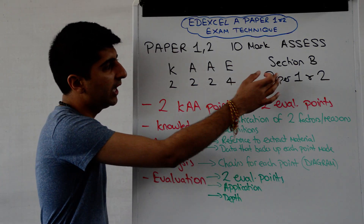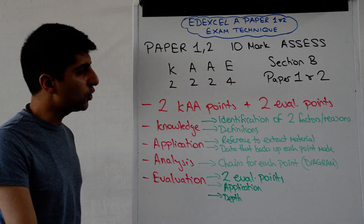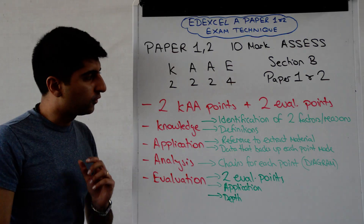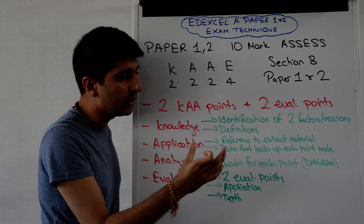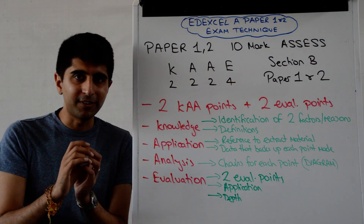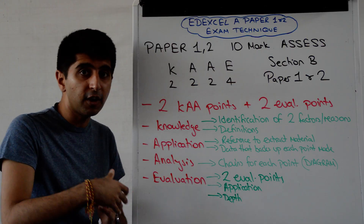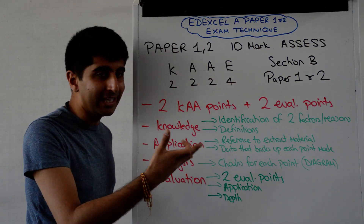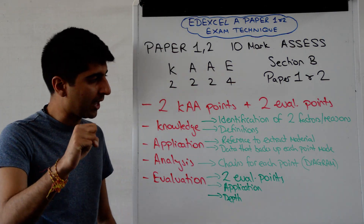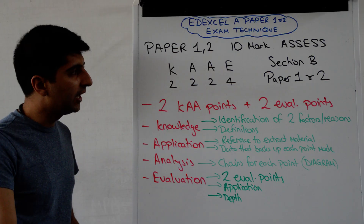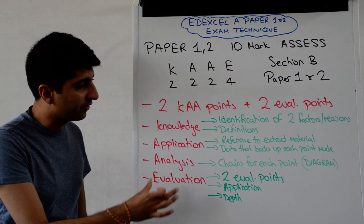In section B of paper one and in paper two, we need two KAA points and two evaluation points — simple as that. We're looking for two points: one explained and evaluated for each point. So two good paragraphs and you'll be absolutely fine.